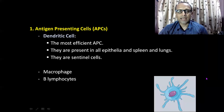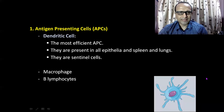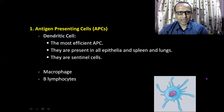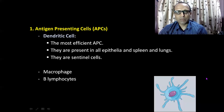Dendritic cells, macrophages, and B-lymphocytes are antigen-presenting cells. They can present antigen to T-lymphocytes. Among these three, dendritic cells are the most efficient antigen-presenting cells. They are present in all epithelia, spleen, and lungs. They are called sentinel cells because as the antigen enters the body, these cells capture and phagocytose the antigen. Then these cells migrate to lymph nodes and spleen, and in those secondary lymphoid organs, they present the antigen to T-lymphocytes.